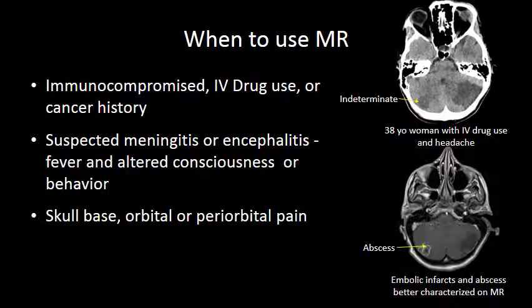MRI is also useful when there are conditions in the patient's history that would predispose them to serious neurologic problems. People who are immunocompromised may be more susceptible to opportunistic infections. Patients with drug use or drug abuse may have endocarditis or be at risk for atypical infections, stroke, and encephalitis or meningitis. Patients with a cancer history may have masses or metastases detected. New headaches in these groups warrant MR imaging, but often a non-contrast CT is performed before the MRI as a quick screening examination.